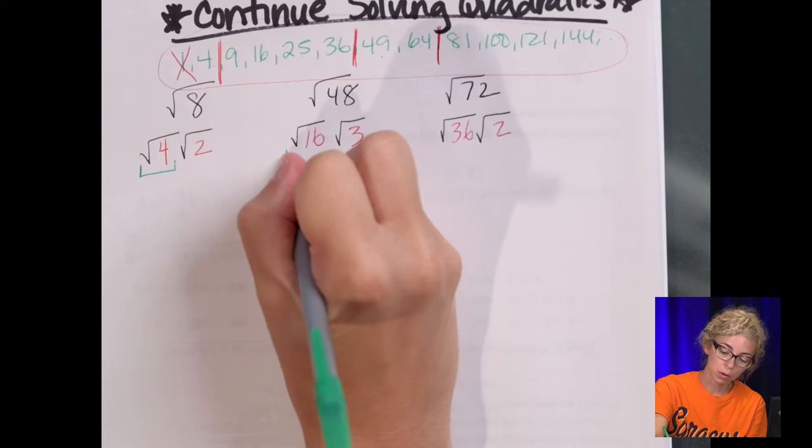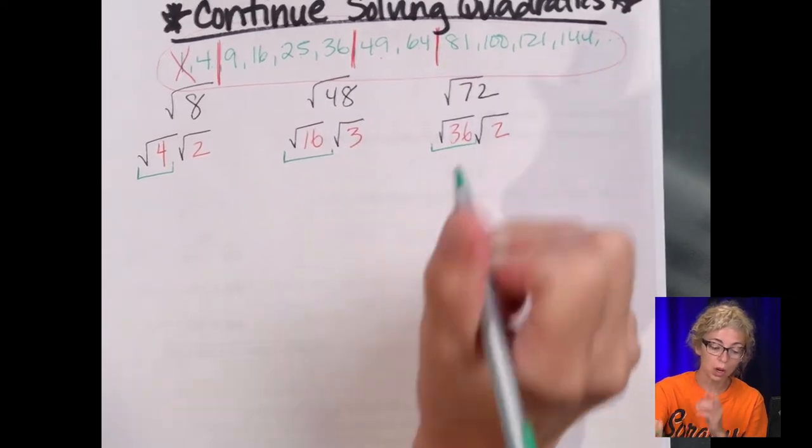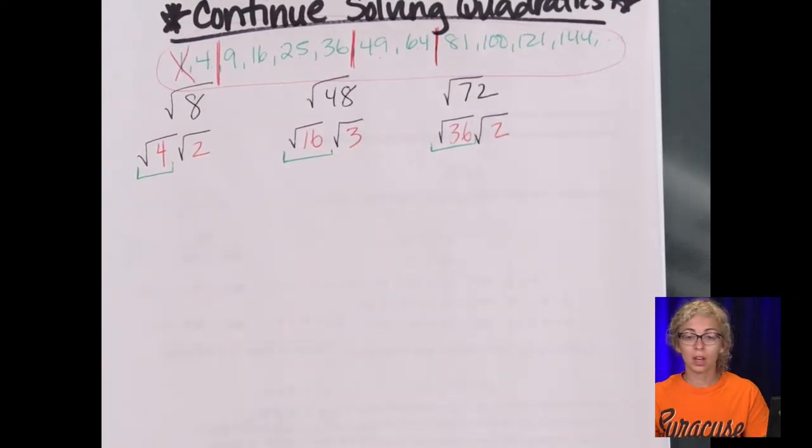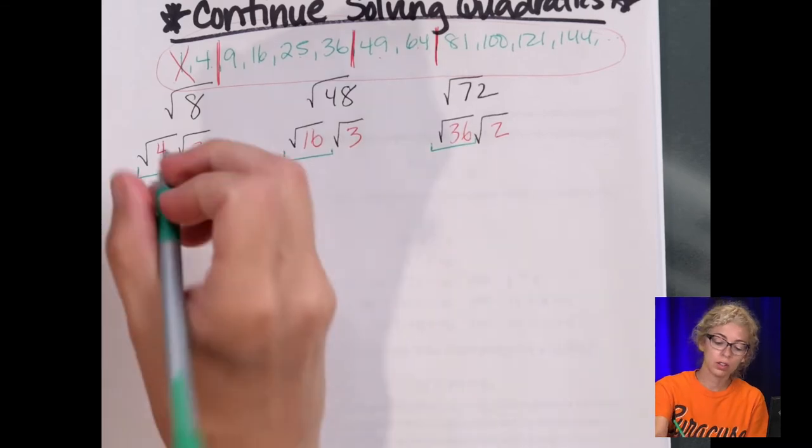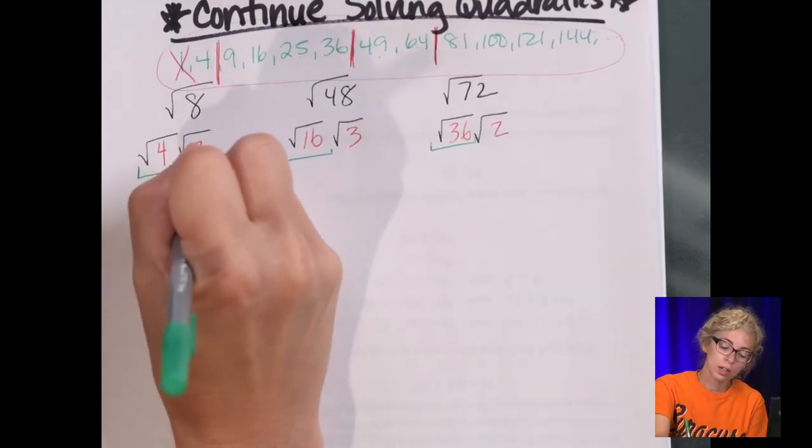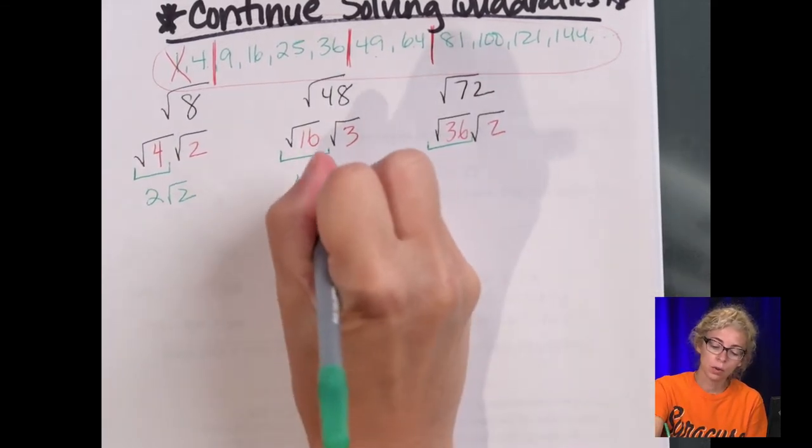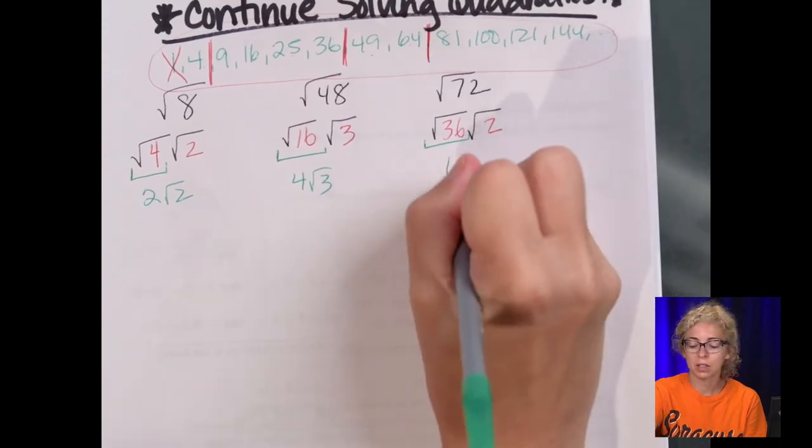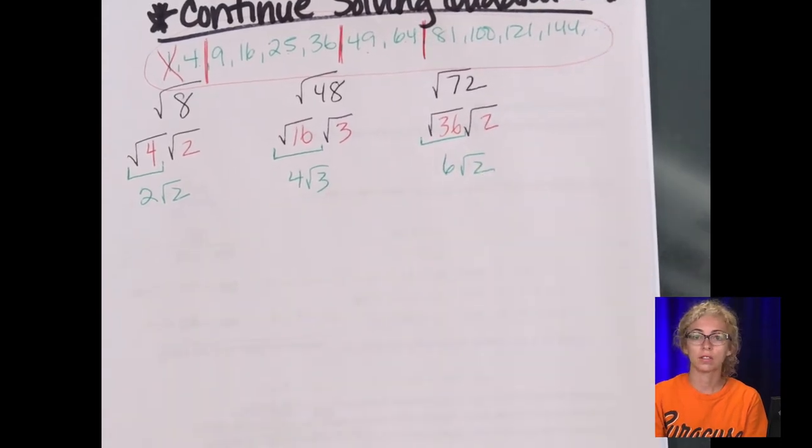So final answers, all you do is take the square root of the perfect squares, which we always write first, so that we have that coefficient out in front of the radical. So this is 2√2, this is 4√3, and then this would be 6√2 as final answers.